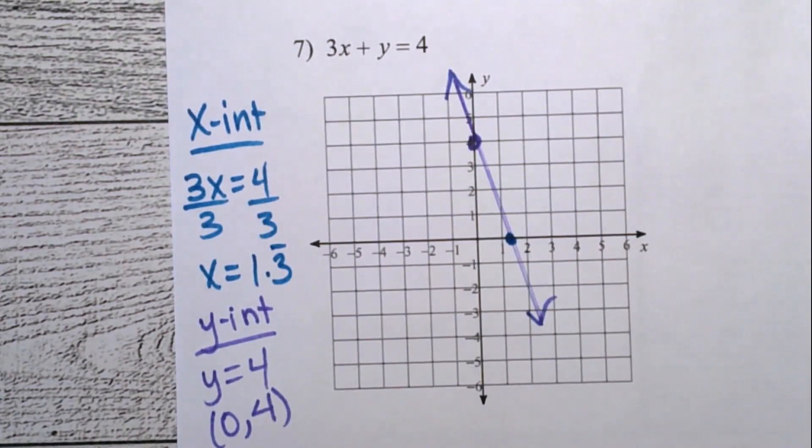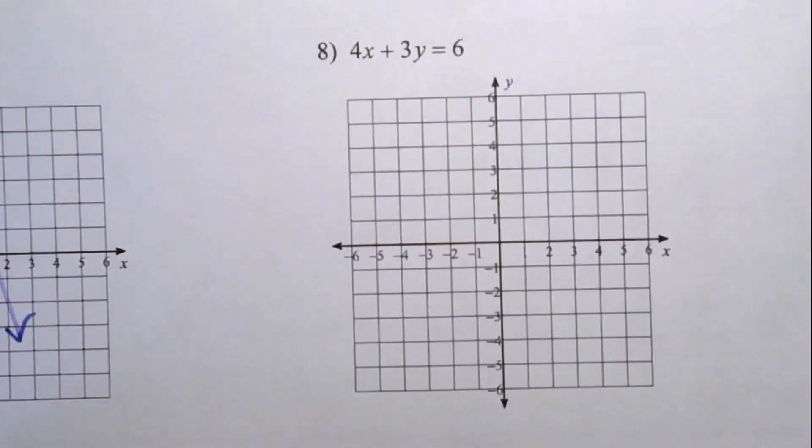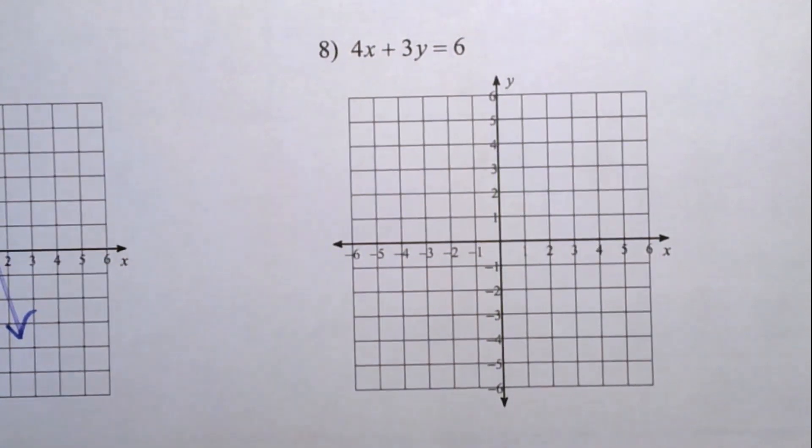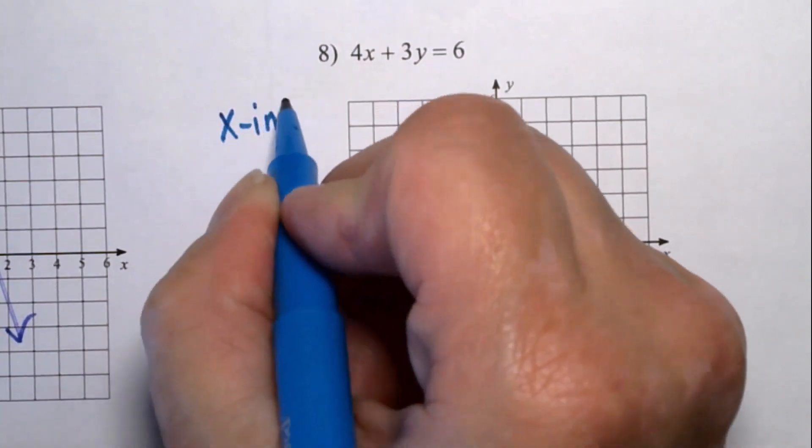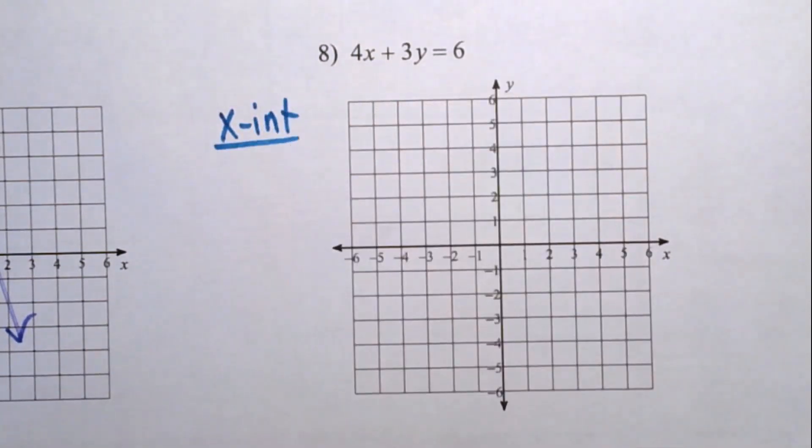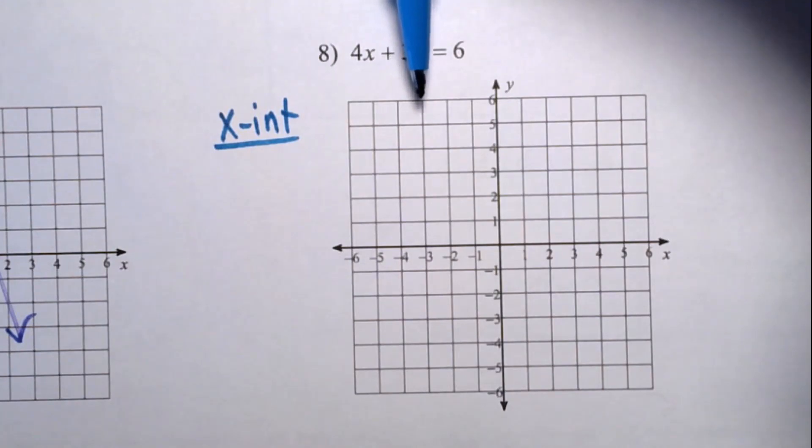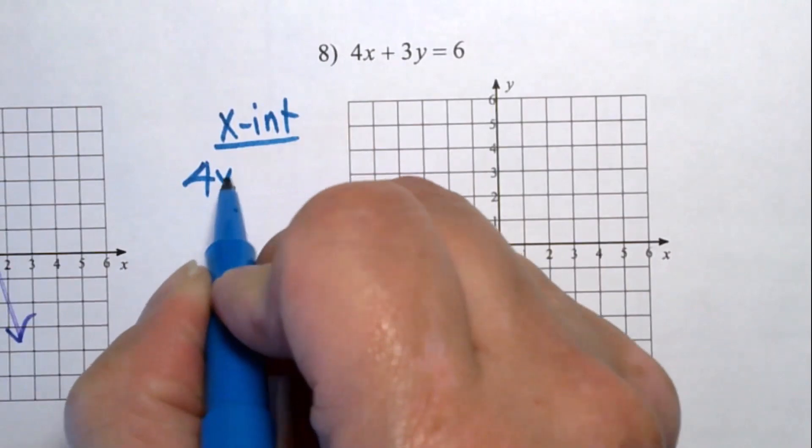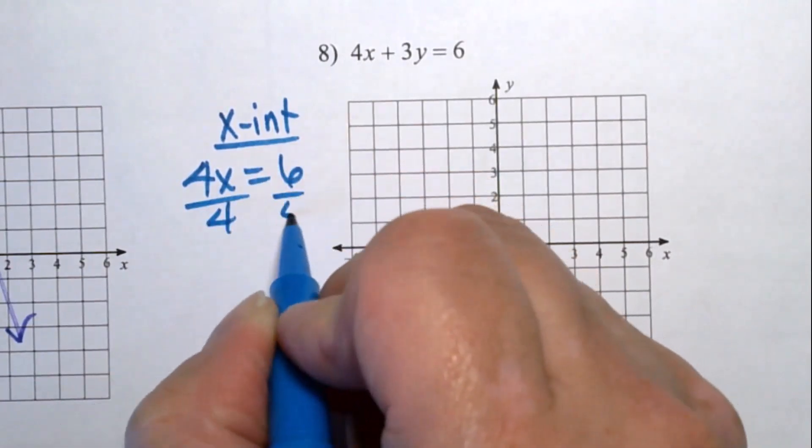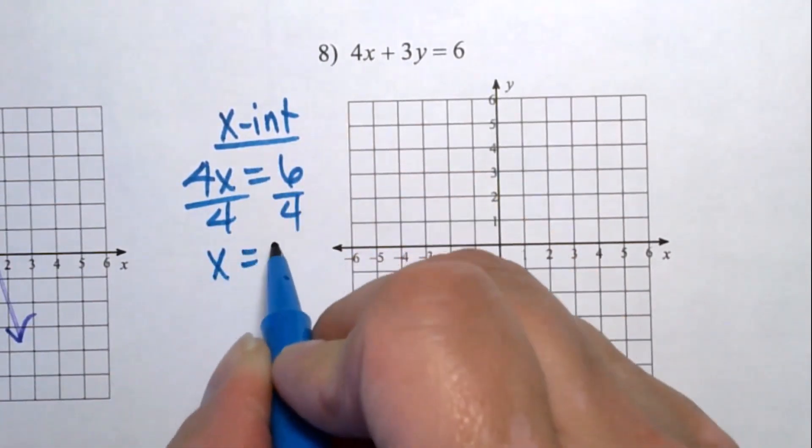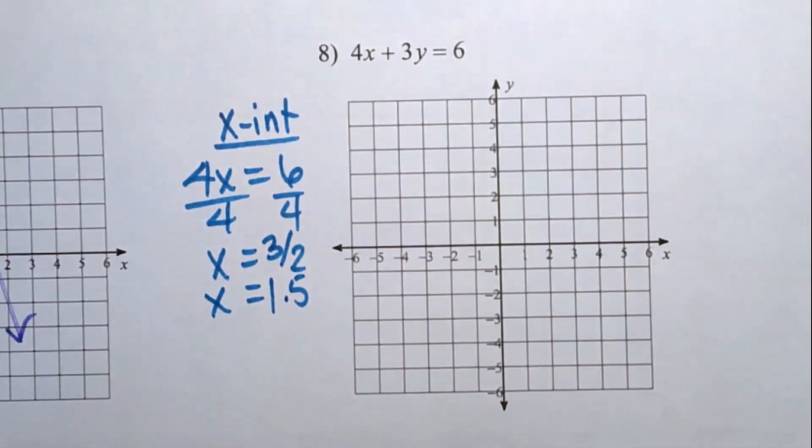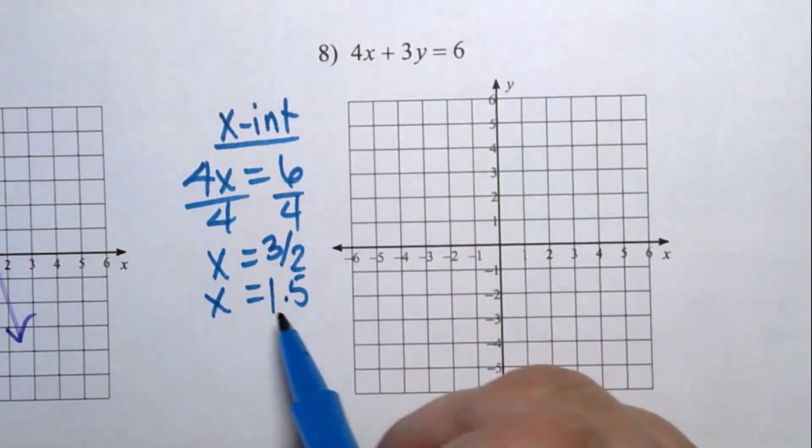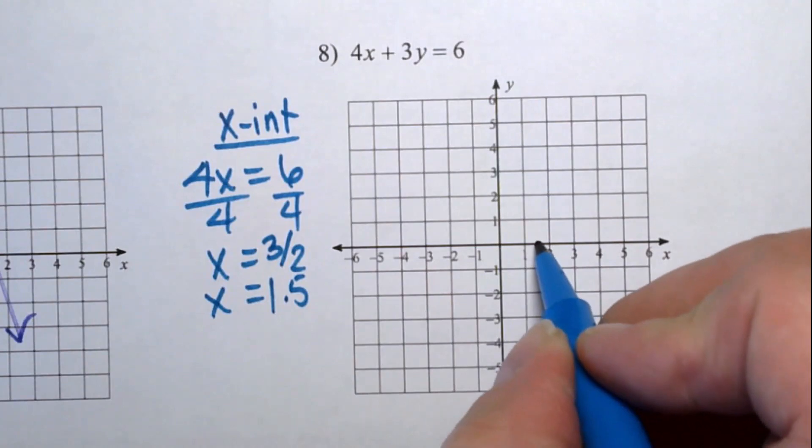All right, number eight. Again, we have to find the x and the y-intercepts to be able to do this. So in order to get the x-intercept, I want to keep the x and lose the y. So I cover up the y part and I'm looking at 4x equals six. 4x equals six. Divide both sides by four. We get x equals, in my head, I can get that to three halves, which I know is 1.5. You can use a calculator to find that. 1.5 is halfway in between. So I put the dot right there.